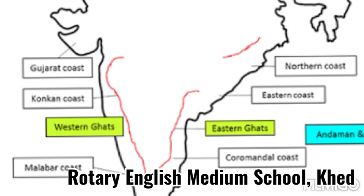To recap: the western coastal plain is divided into three parts — the Gujarat coast, Konkan, and Malabar. The eastern coastal plain is divided into two parts — the Northern Circar in the north and the Coromandel Coast in the south.